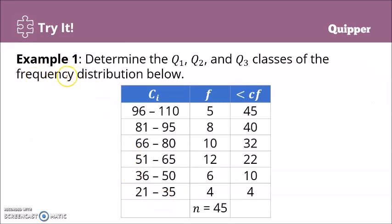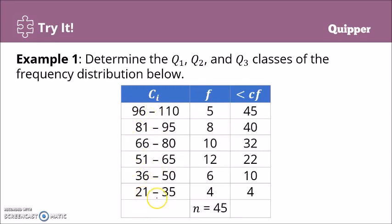Now let's try this: determine the first quartile, second quartile, and third quartile classes of the frequency distribution below. This shows an example of grouped data — it's no longer raw data, it's in a frequency table with intervals already. We have class intervals: 21 to 35 with frequency 4, 36 to 50 with frequency 6, and so on up to 96 to 100 with frequency 5. The total frequency is 45.